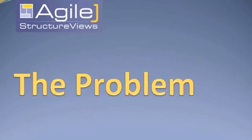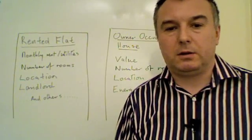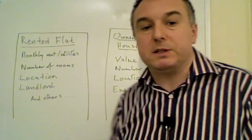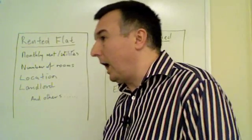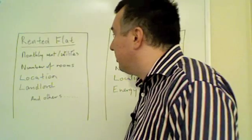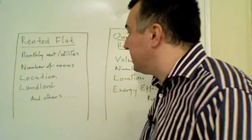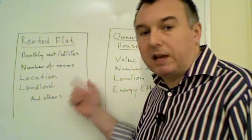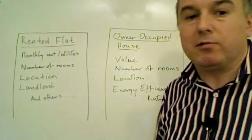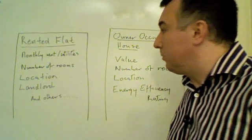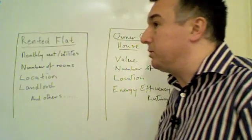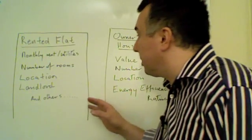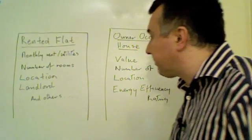Generalization. Let's suppose we've been asked by a property real estate company to write an application to store and manage all of the properties that they have on their books. We do some analysis and find out that they need to store information about rented flats — in particular the attributes are the monthly rent including utilities, the number of rooms, the location, the landlord, and maybe 20 or 30 other attributes as well. So we write some code which accesses just those attributes, following the principle of encapsulation that we looked at in the previous video.